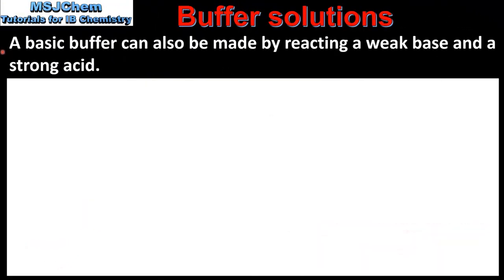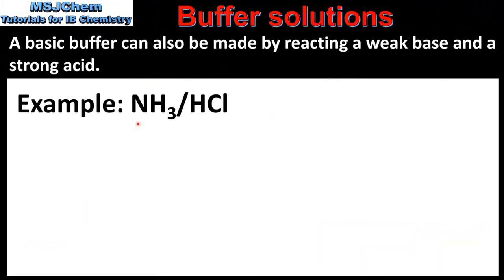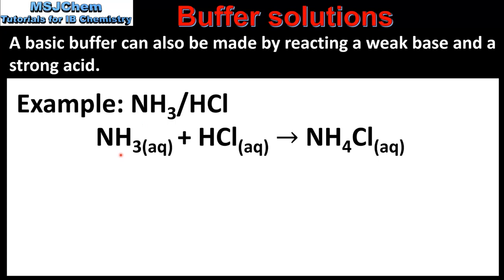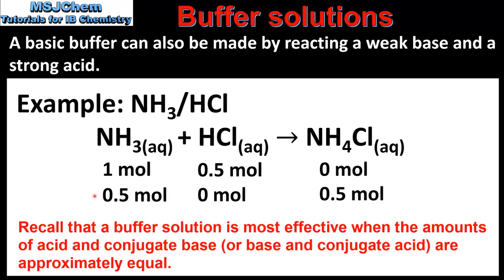A basic buffer can also be made by reacting a weak base and a strong acid. The example is the weak base ammonia and the strong acid hydrochloric acid, which react together to form the salt ammonium chloride. In this reaction, 1 mole of ammonia reacts with 0.5 moles of hydrochloric acid. Once the reaction is complete we have equal amounts of the weak base ammonia and the salt ammonium chloride. Ammonium chloride fully dissociates to produce the ammonium ion, so in this solution we have equal amounts of the weak base ammonia and its conjugate acid the ammonium ion, therefore acting as a buffer solution.